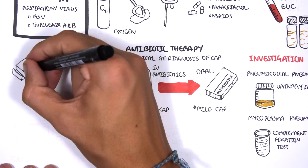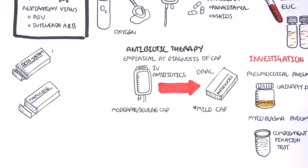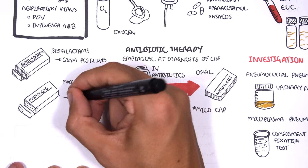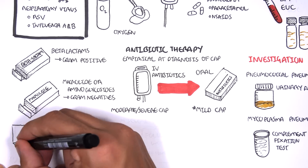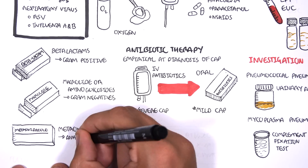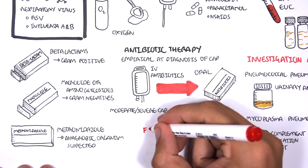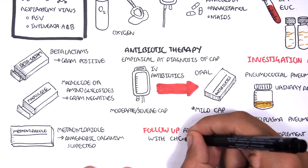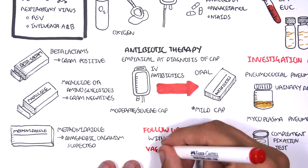In general, for community-acquired pneumonia, two antibiotic types are given empirically to target two different groups of bacteria. Beta-lactams target gram-positives, and macrolides or aminoglycosides target gram-negatives as well as gram-positives. Metronidazole can be given specifically to target anaerobic organisms if aspiration pneumonia is suspected. After treatment or discharge, follow up at six weeks with a chest x-ray to the family doctor. It is also recommended, especially in the elderly, to get annual vaccination to prevent further pneumonia.